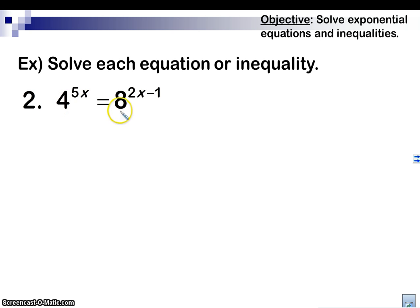Let's take a look at another one. 4 to the 5x equals 8 to the 2x minus 1. Well, 8 is not, 4 squared is 16. So that's not going to work to say this is 4 squared. So we've got to actually figure out that 4 is 2 squared, and 8 is 2 cubed.